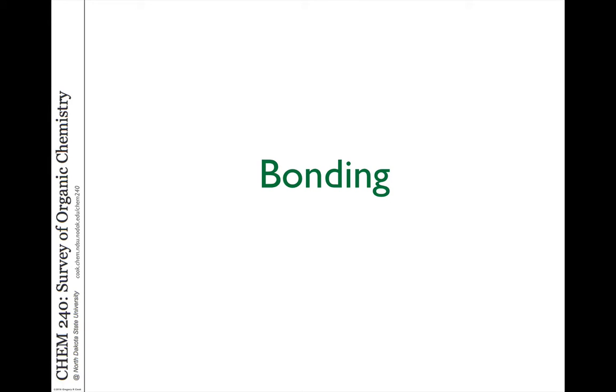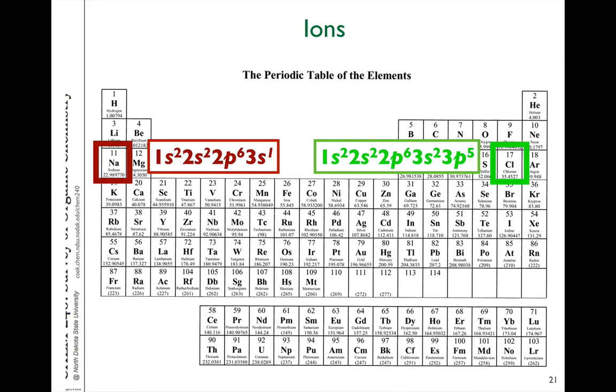When we talk about bonding, what we're trying to do is take a look at the atoms, the atomic configurations, and look at how they can be satisfied in filling their valence shell with electrons. That can be achieved either by transferring electrons from one atom to another or by sharing those electrons in covalent bonds.